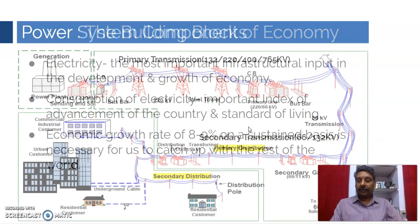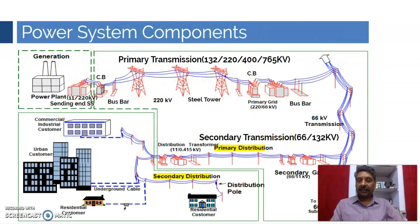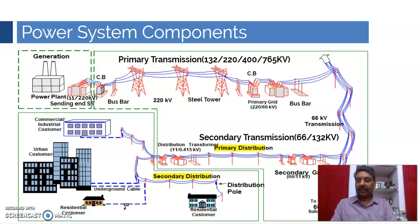Let us see the structure of this power system as a whole. You will have generation. There are two ways of generation: we have centralized power plants on one side, and we have distributed generation these days, which is gearing up at a higher pace.